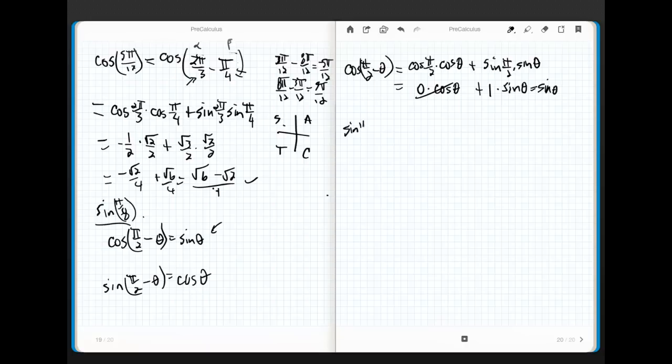Similarly, if I want to do the sine of π/2 minus θ, watch what happens. This is just sine of π/2 cosine of θ minus cosine of π/2 sine of θ. Again, cosine of π/2 is 0, right? So this turns into 1 times cos θ minus 0 times sine θ. Gone, and I end up with cos θ.